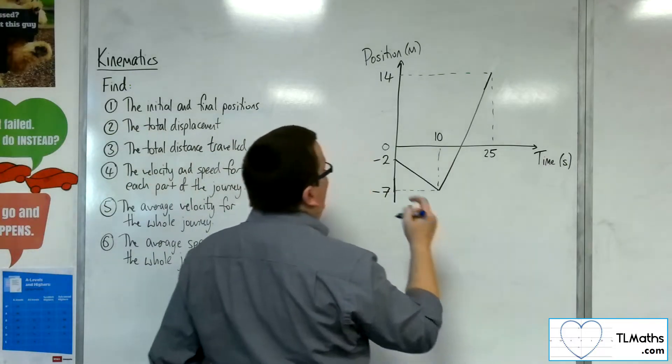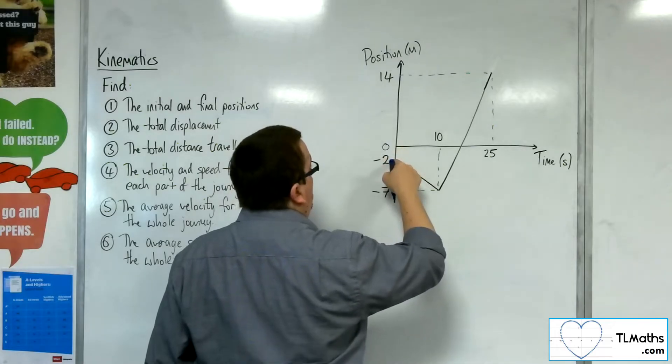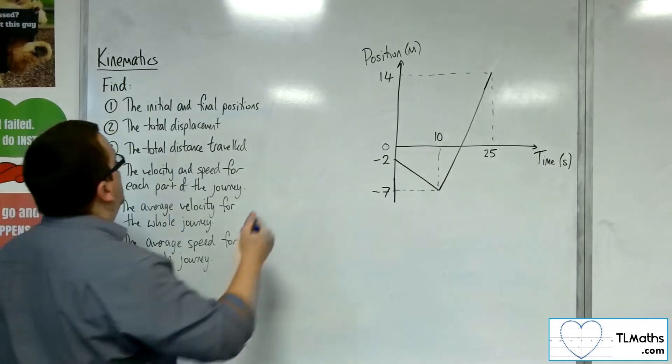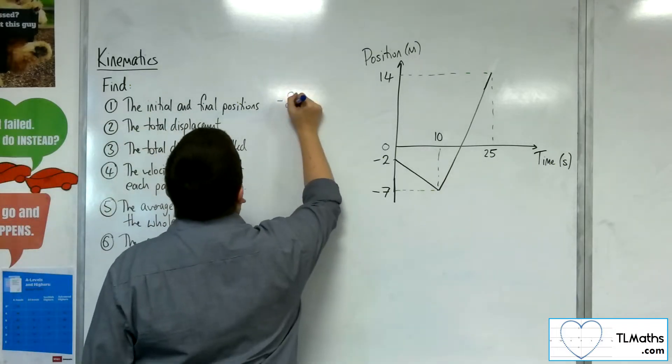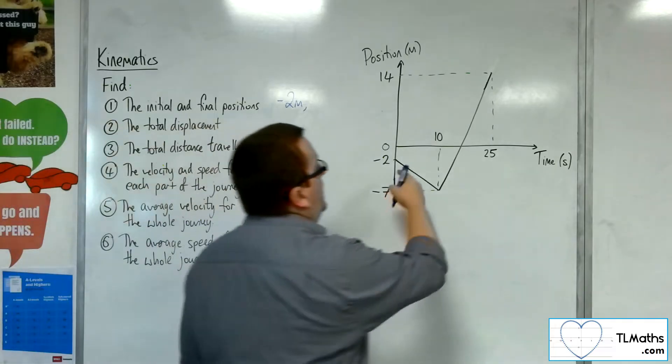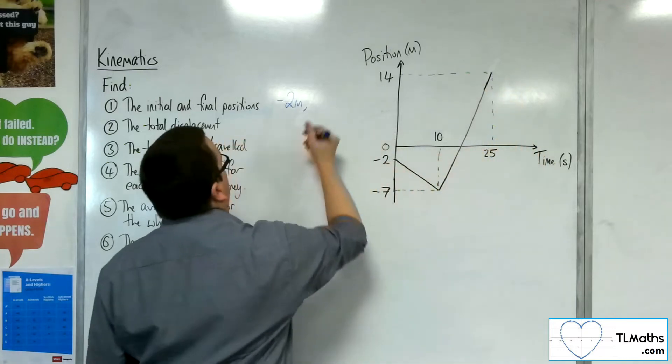The initial position is when time is 0, we are minus 2 metres away from the origin. So we would have minus 2 metres as the initial position. And the final position is where I finally end up at, and that's 14 metres away from the origin.